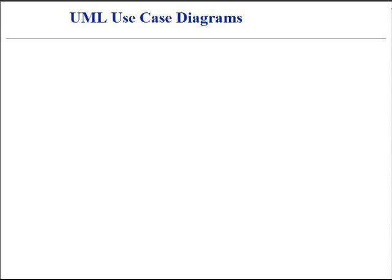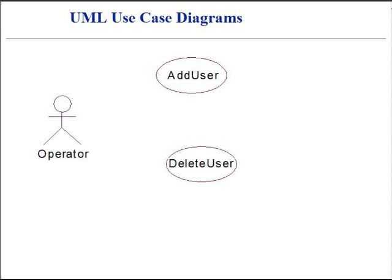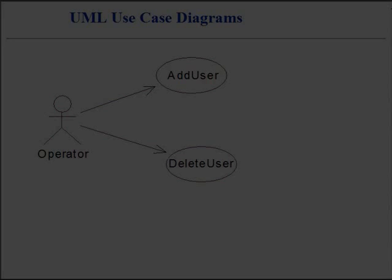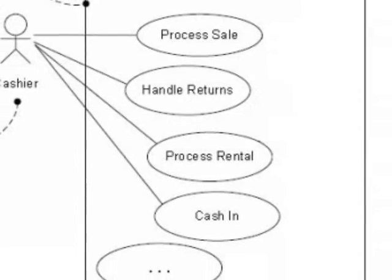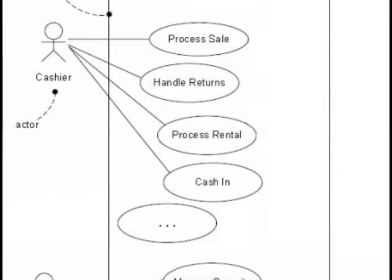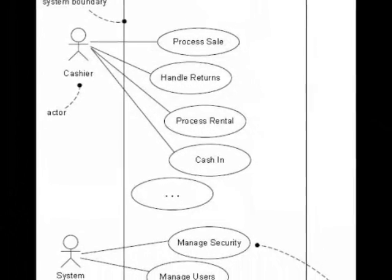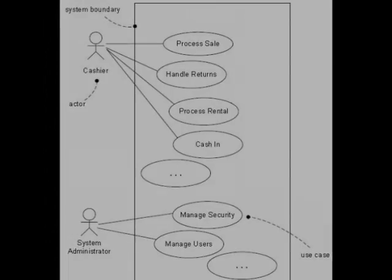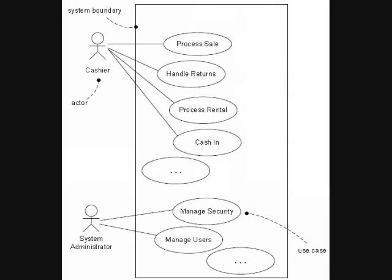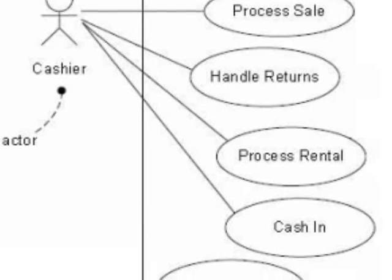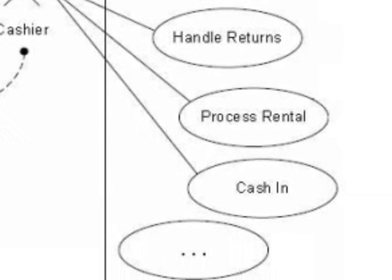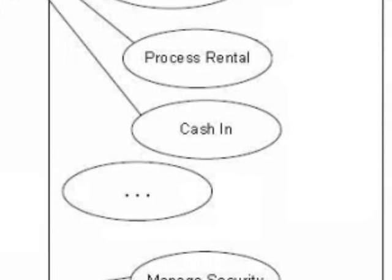The Unified Modeling Language provides diagrams to illustrate the names of use cases, the actors, and the relationships between those two. Measured by the Requirements Model, the use case diagrams and use case relationships fall into secondary categories. Primarily, use cases are text documents. Doing use case work means describing cases in text form. It is best to downplay use case diagrams and relationships, and instead focus on writing.